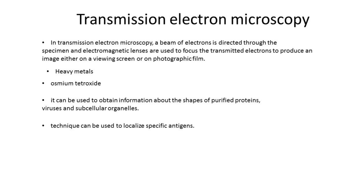Since electrons pass uniformly through biological material, unstained specimens give very poor images. Therefore, the specimen must routinely be stained in order to scatter some of the incident electrons, which are then not focused by the electromagnetic lenses and so do not form the image. Heavy metals such as gold and platinum are often used to stain biological materials. In particular, osmium tetroxide preferentially stains certain cellular components, such as membranes, which appear black in the image.